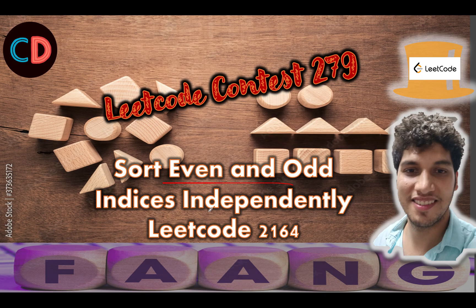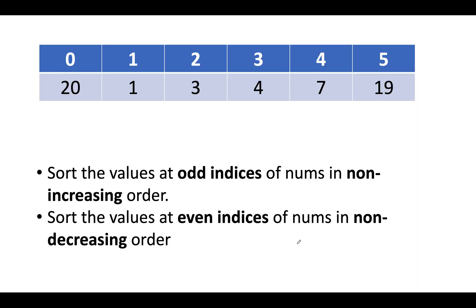Sort Even and Odd Indices Independently, LeetCode 2164. Let's get started. I have taken a slightly longer example so that you get a good hold of the concept. The input array is 2, 1, 3, 4, 7, 1, 9. What do we need to do? We need to sort the values at odd indexes in non-increasing order — non-increasing means decreasing order.